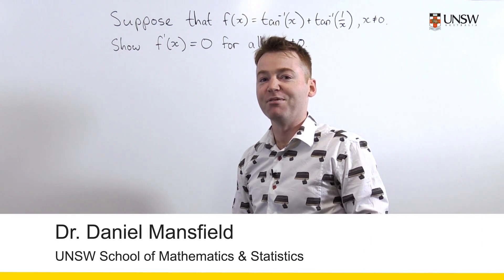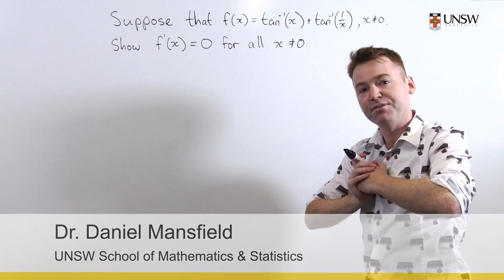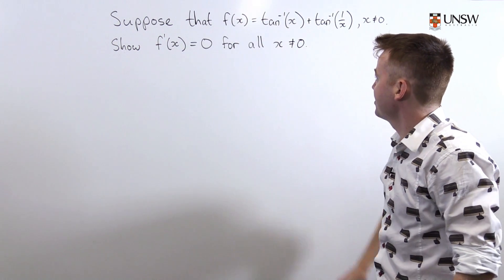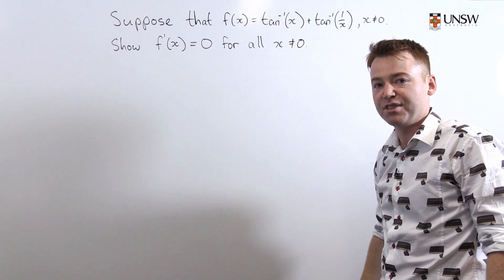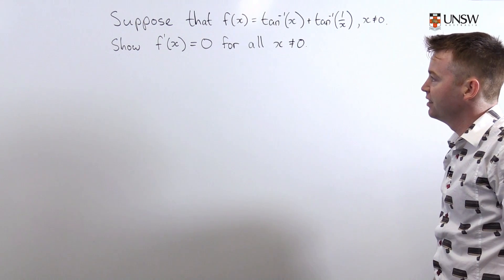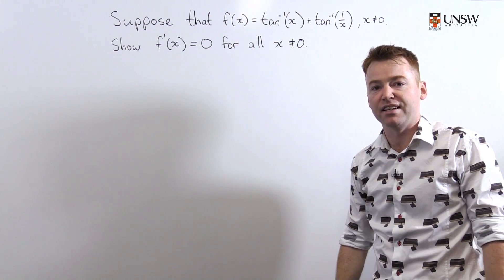Hello, welcome back to Math 1131 1141 Calculus. Here we have a question about derivatives of inverse trig functions. Suppose we have this sum of two inverse tans, tan⁻¹(x) and tan⁻¹(1/x). Show that its derivative is 0 for all x other than x equals 0.